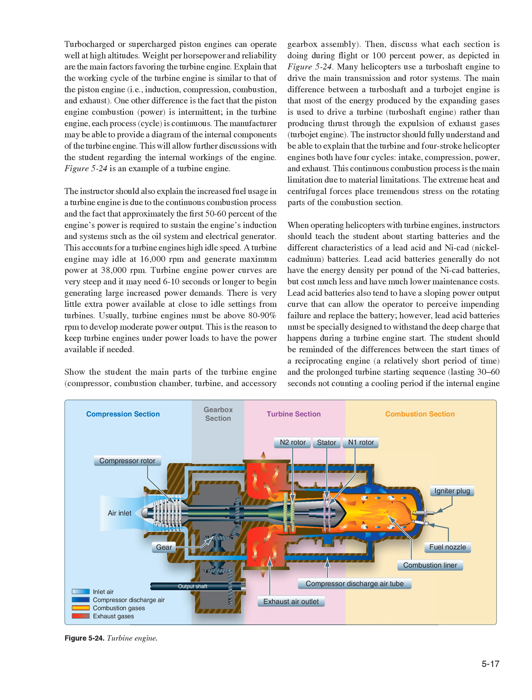Show the student the main parts of the turbine engine: compressor, combustion chamber, turbine, and accessory gearbox assembly. Many helicopters use a turboshaft engine to drive the main transmission and rotor systems. The main difference between a turboshaft and a turbojet engine is that most of the energy produced by the expanding gases is used to drive a turbine rather than producing thrust through the expulsion of exhaust gases. The turbine and four-stroke helicopter engines both have four cycles: intake, compression, power, and exhaust. This continuous combustion process is the main limitation due to material limitations, as the extreme heat and centrifugal forces place tremendous stress on the rotating parts of the combustion section.